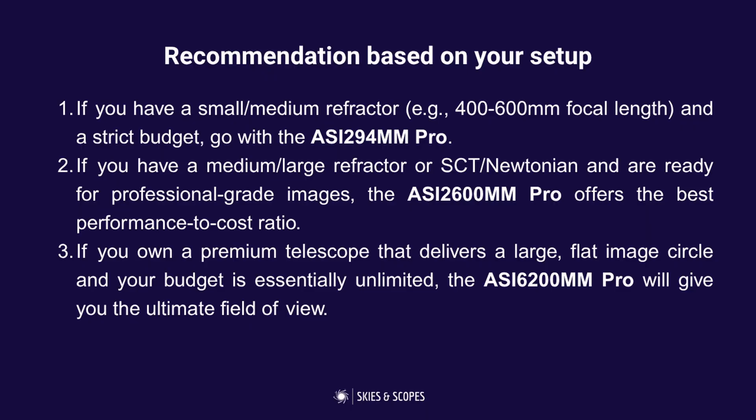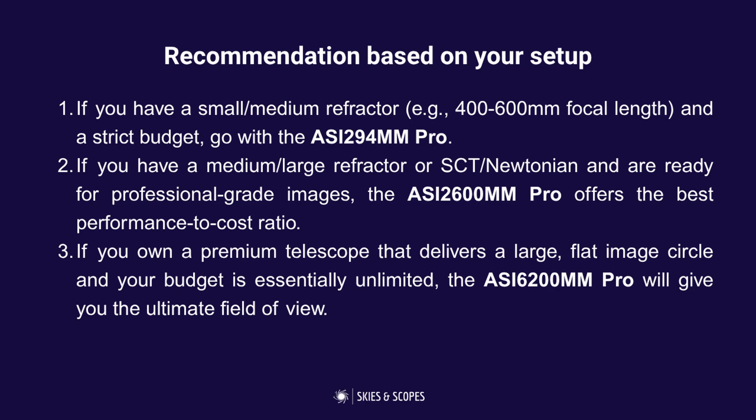So how would you pick between those three ZWO models? Factor in budget, telescope size, and workflow complexity. The 294MM Pro suits you if you have a small or medium refractor and a limited budget. The 2600MM Pro is ideal for a medium or large refractor, Schmidt-Cassegrain, or Newtonian — it offers the best performance-to-cost ratio. And if you own a premium large refractor and have the budget, the 6200MM Pro delivers the ultimate field of view and highest spec at the highest cost.